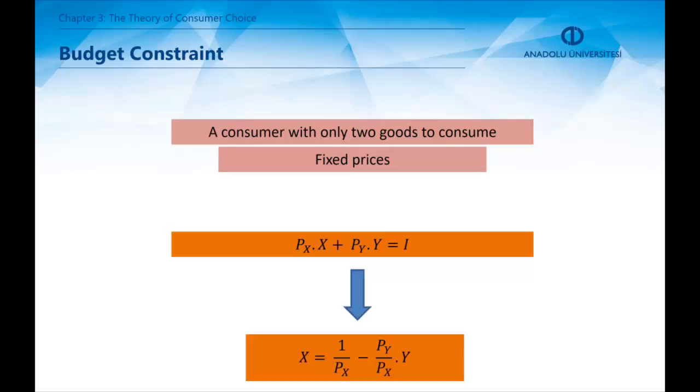Consumers can't spend as much as they wish for. The reason for that is the budget constraint. In economics, the budget constraint is shown by Px*X + Py*Y = I. This is an illustration of a consumer with a limited budget and only two goods to consume.